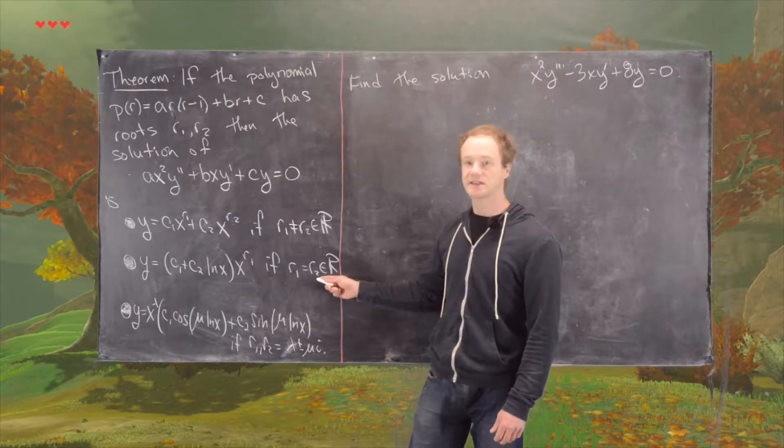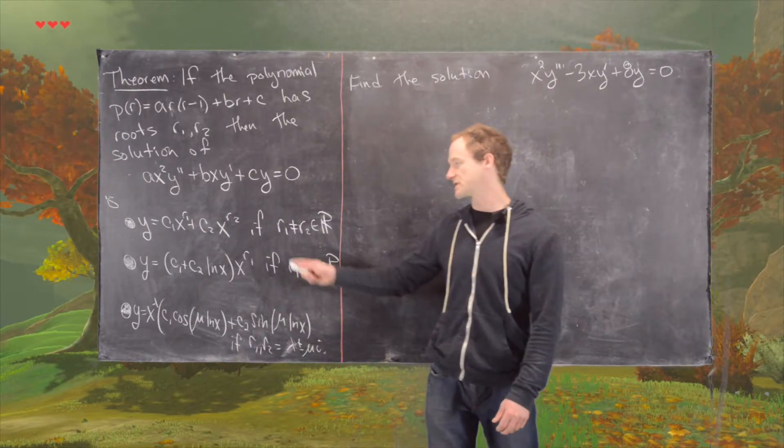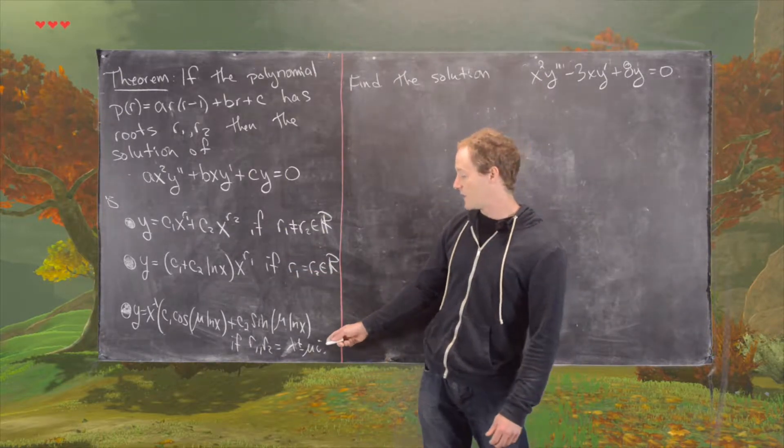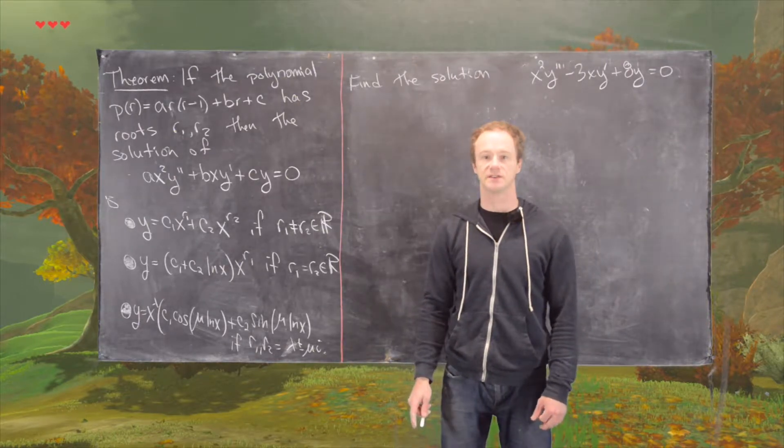If they are non-distinct but real, in other words they're repeating, we have C1 plus C2 natural log of X, times X to the R1. And if we have complex conjugate roots, we get solutions that involve sines and cosines.